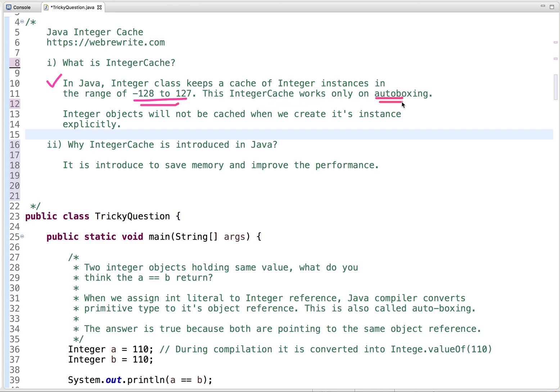So what is autoboxing? So when we assign int literal to integer reference, Java converts primitive type to its object reference and this is called autoboxing.